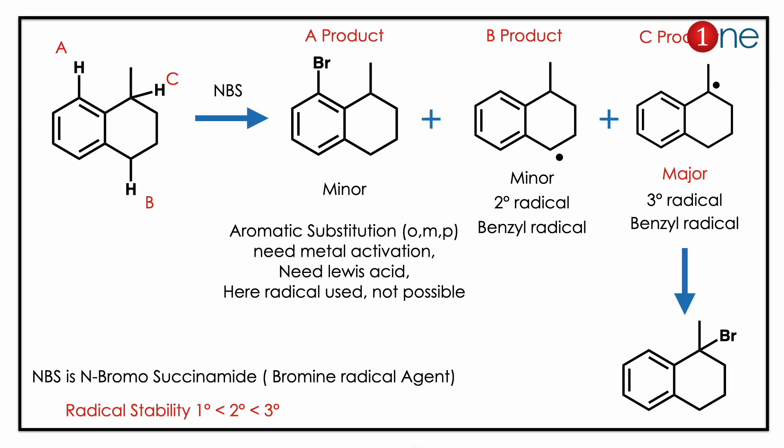The reaction may look simple but it has multiple possibilities. Let us analyze the reagent, which is NBS — N-bromosuccinimide. It is a bromine radical agent that provides the radical. There are three hydrogens: A, B, and C.